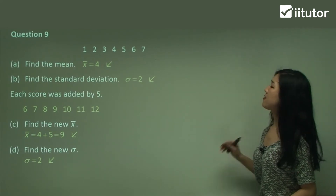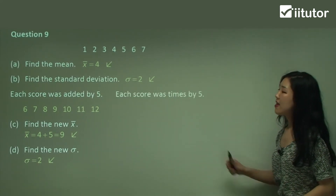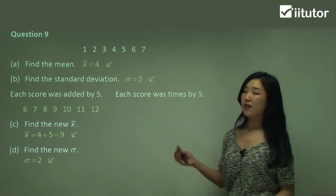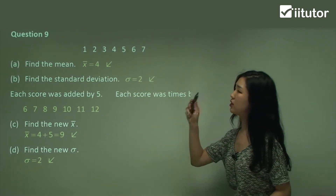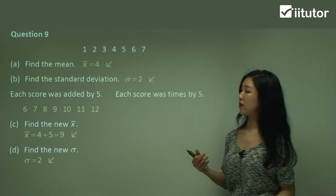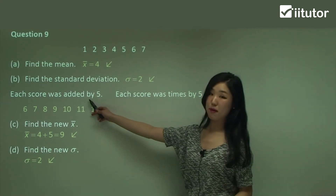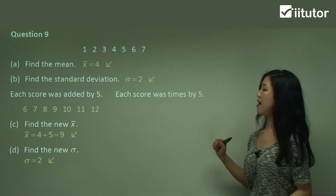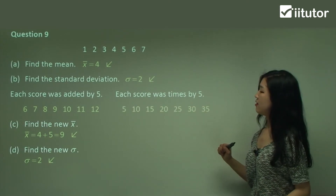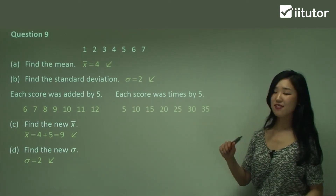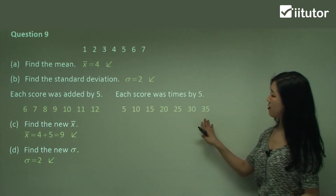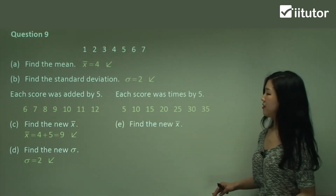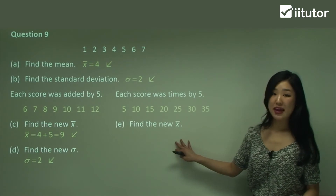This time what I'm going to say is that each score was multiplied by five — whereas previously I added by five. Let's see what the difference is. Go ahead and multiply everything by five and you should get these scores. So with those values, I'm going to start by finding the new mean.